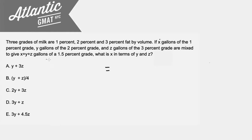So we want to take our components. We've got x gallons of 1% and then y gallons of 2% and z gallons of 3%. So those are our individual pieces that, when added together, end up being 1.5% of the total gallons, and that's just the sum of the three variables because each variable represents gallons.